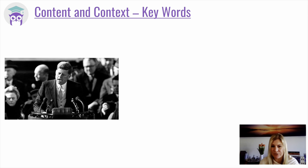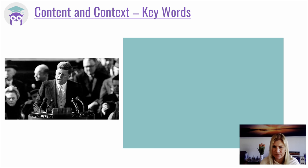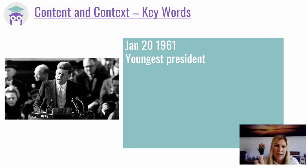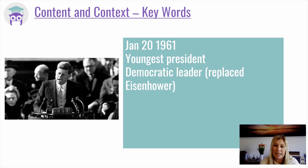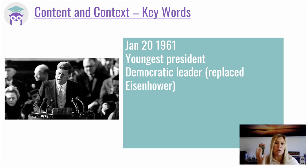Let's go through some of the major factors of content and context for the inaugural speech. This took place on January the 20th, 1961. John F. Kennedy was the youngest president — he was only in his early 40s — and he was replacing Eisenhower, who was a Republican, so JFK was a Democrat coming into power. He only served one term, so this is his one and only inaugural speech, and it's a speech so full of hope and optimism whilst balancing out the threats of the day.